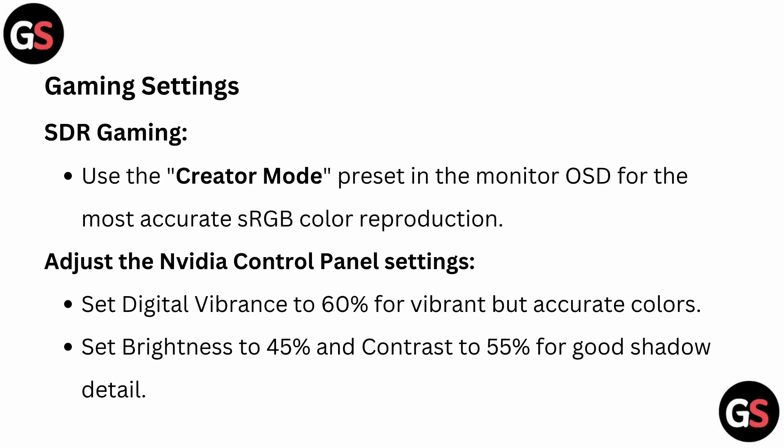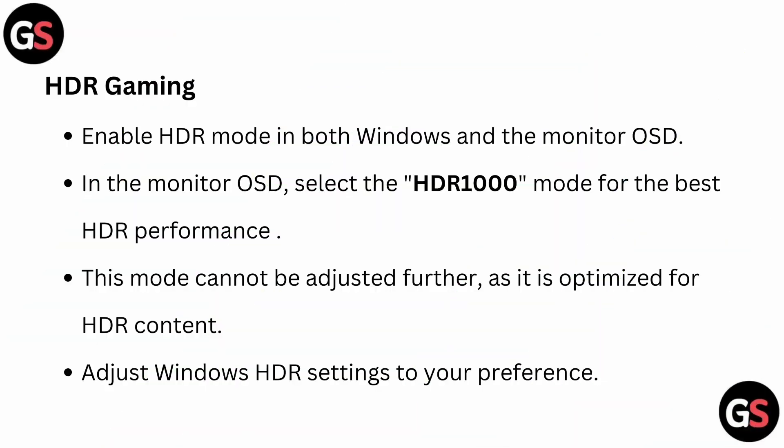In the Nvidia Control Panel, set digital vibrance to 60% for vibrant but accurate color, brightness to 45%, and contrast to 55% for good shadow detail.